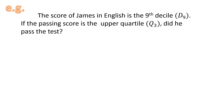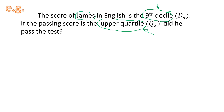Another problem. The score of James in English is the ninth decile. If the passing score is the upper quartile, which is quartile 3, did he pass the exam? Here, we don't have any basis for the actual scores, so what we are simply going to do is compare the two measures of position: the ninth decile versus the upper quartile. The passing score is the upper quartile only, so we must have a higher percent for the ninth decile for James to have passed the test.